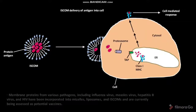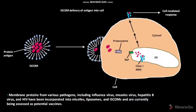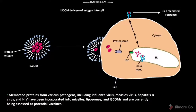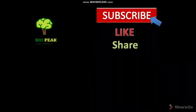The membrane proteins from various pathogens including influenza virus, measles virus, hepatitis B virus, and HIV have been incorporated into micelles, liposomes, and ISCOMs, and are currently being assessed as potential vaccines.